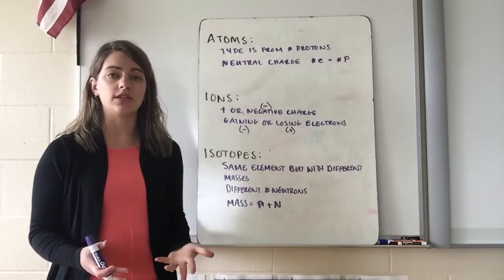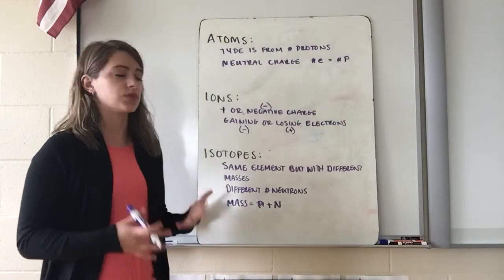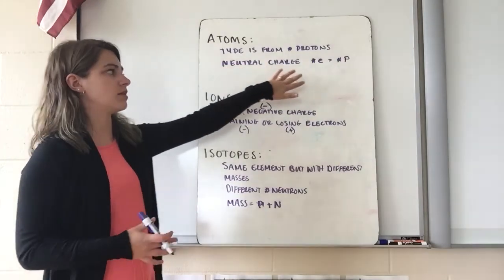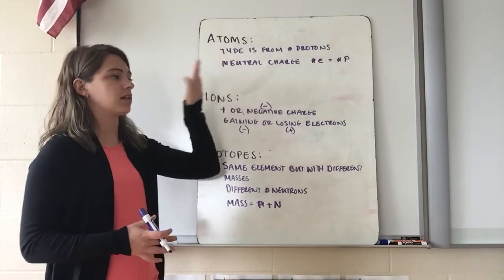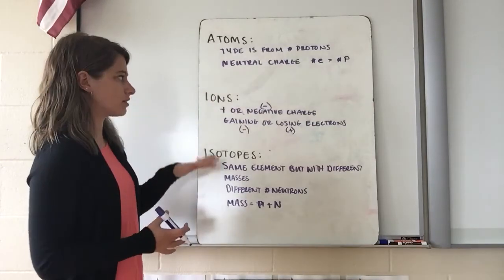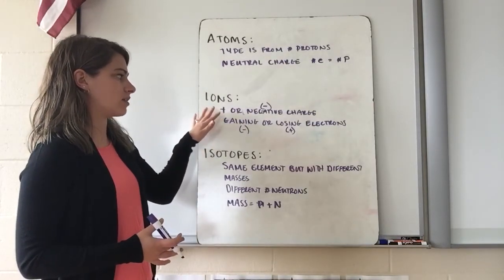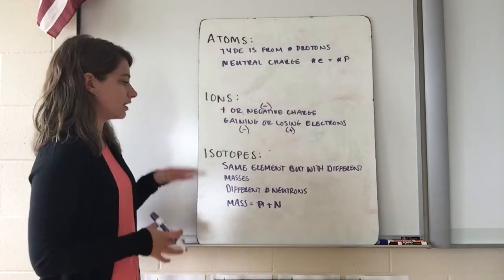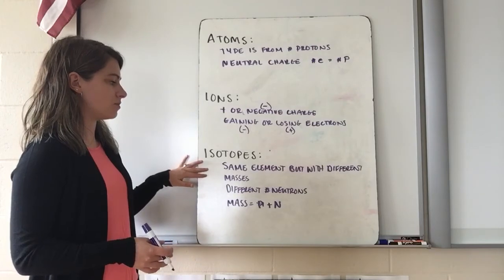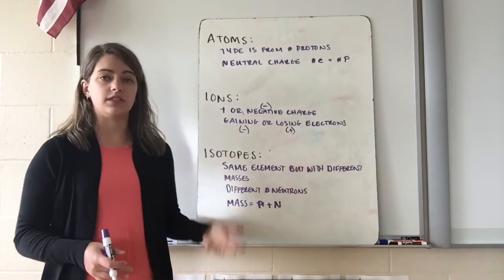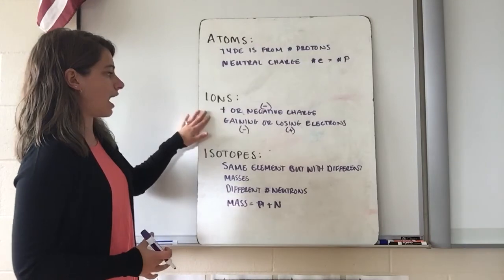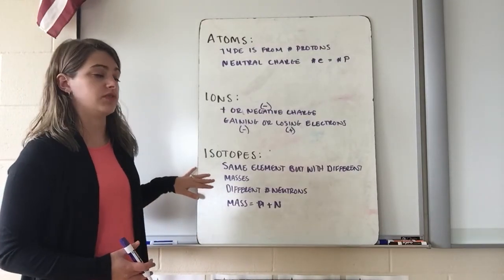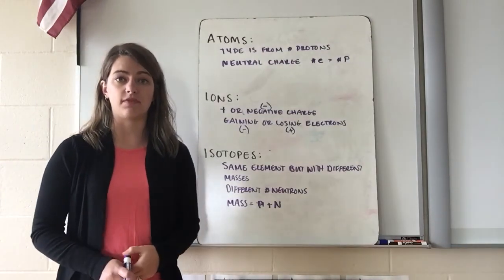These are really important vocabulary terms to keep straight. An atom is a neutral particle — same number of electrons as protons, and protons tell us the type of element. Ions have either a positive or negative charge, formed by gaining or losing electrons — not changing the number of protons. Isotopes are the same element but with different masses, meaning different numbers of neutrons. With ions we're changing electrons; with isotopes we're changing neutrons. If you change the protons, you change what type of element it is.